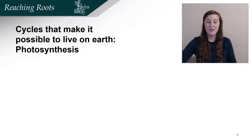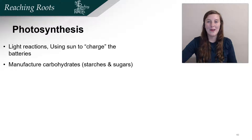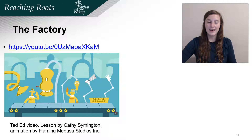We're now going to dive into the cyclical process which is photosynthesis. We already learned about the light reactions, where the plant uses the energy from the sun to charge batteries. These batteries are then used in the Calvin cycle, where the plant manufactures carbohydrates. We're now going to watch an excellent video made by TED-Ed. Please find this video link in the description underneath this video, then come back and we will summarize the video and review the process thoroughly.